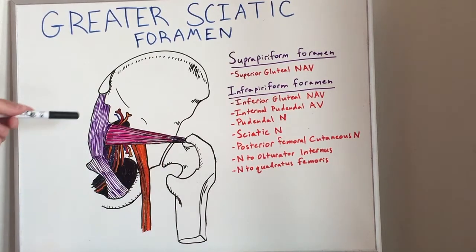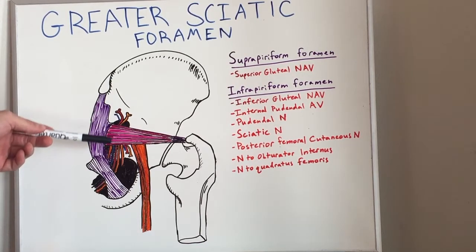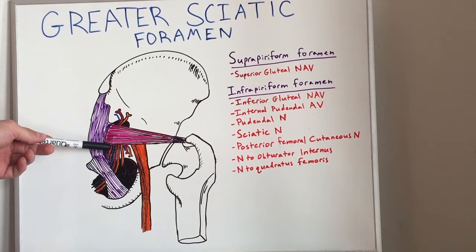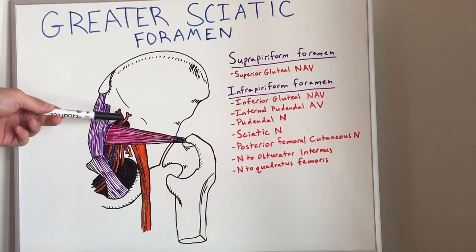which divides the greater sciatic foramen into a suprapiriform foramen and an infrapiriform foramen. What is significant are the structures and vessels which pass through these foramen. As we can see, above the piriformis, in the suprapiriform foramen,